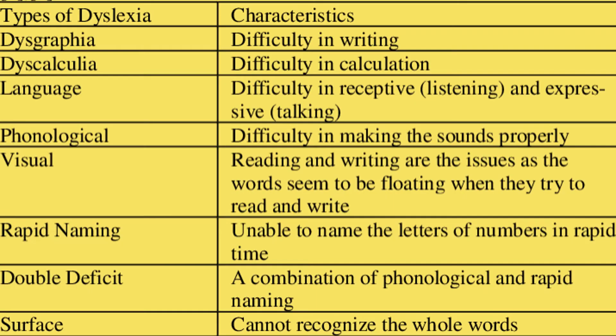There are different types of dyslexia, but there are four major forms in which there is a problem in reading, writing, spelling, or fine motor and gross motor skills. These are split into different types. Number one is dysgraphia, in which a child faces difficulty in writing. The next one is dyscalculia, which is difficulty in calculation.